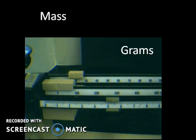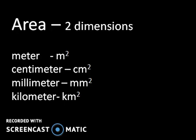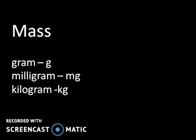To review: length — we're going to measure in meters, centimeters, millimeters, or kilometers. If we're talking area, it's the amount of space of a two-dimensional object in meters squared, centimeters squared, millimeters squared, or kilometers squared. If it's volume of a solid, that's the space of a three-dimensional object in cubic centimeters or cubic meters. If it's volume of a liquid, then it's liters or milliliters. And finally, if we are speaking about mass, we will be measuring in grams, milligrams, or kilograms.